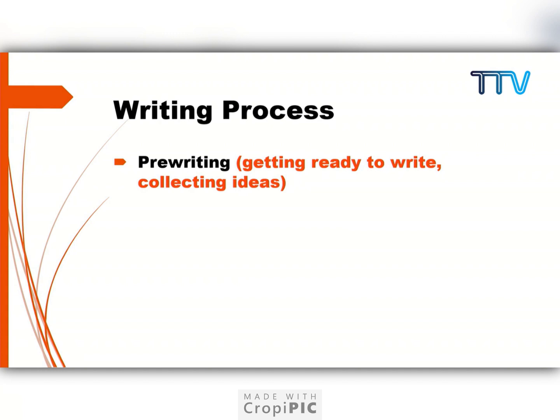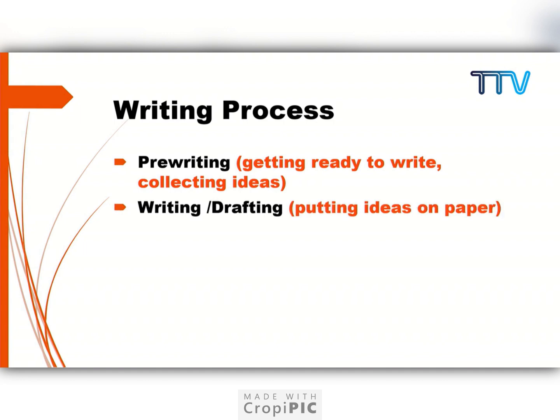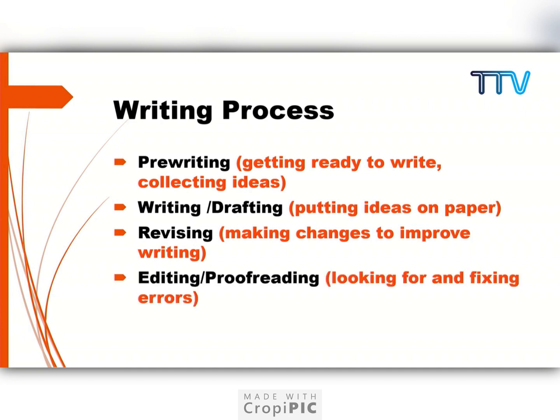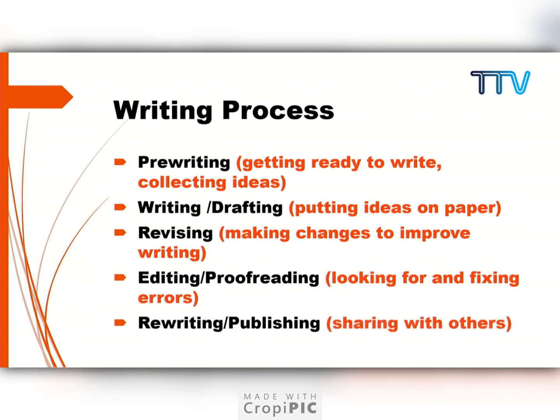The writing process steps are: pre-writing — that is getting ready to write and collecting ideas; writing and drafting — putting your ideas on paper as the first draft; revising — making changes to improve your writing; editing and proofreading — looking for and fixing errors; and finally rewriting and publishing — rewriting edited portions and sharing with your friends through reading or writing.